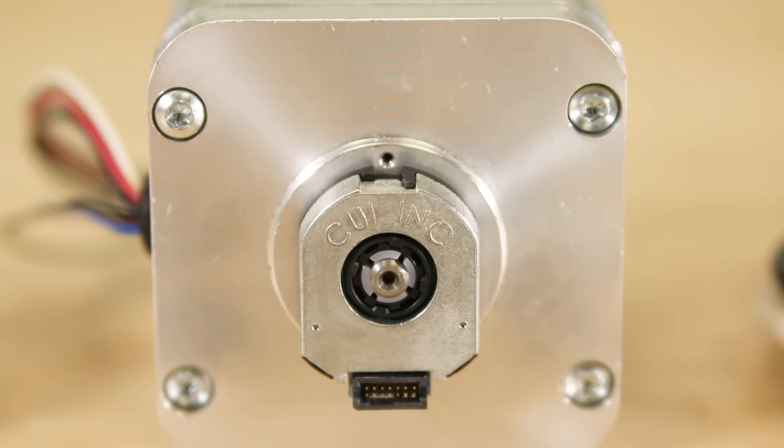The receiving end of the modulated signal then passes back to a transmitter where it's compared against the original through an ASIC. CUI's AMT encoder series uses such capacitive technology.